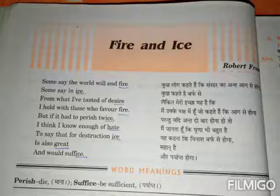Fire and ice symbolize two opposite things — they symbolize two different things. This is basically a symbolizing poem. There is a book called 'Dante's Inferno' from which this poem is inspired. In that book, fire symbolizes desire and snow symbolizes hate. In this poem, the poet says that the world will end in two different ways: first, fire, and second, ice.